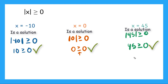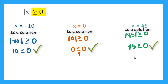What do you notice about all of our x values? They're all true — they're all solutions. Can you think of why that might be? Here's a hint: is the absolute value of a number ever negative? No. That's the fancy thing about absolute value — it's always positive or zero. And is every positive number greater than or equal to zero? Yes, they're all greater than zero, and that's what makes them positive. So for this special inequality, every single possible value of x will be a solution.